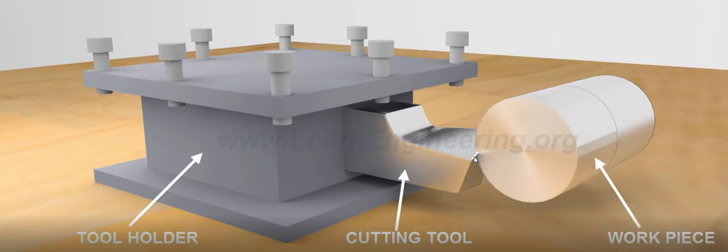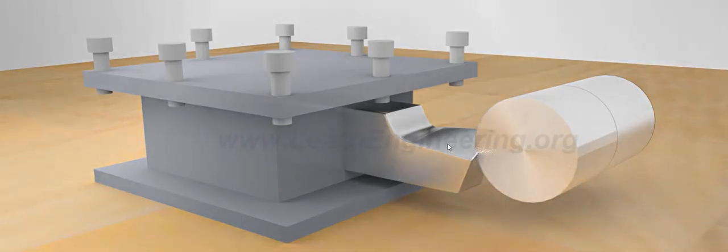Now we will move towards the geometry of a single point cutting tool. The end cutting edge makes an angle with the perpendicular to the tool length — this angle is known as the end cutting edge angle. Similarly we have the side cutting edge angle and the nose radius. We also have a back rake angle and side rake angle, and similarly an end flank angle and side flank angle, also called the side clearance angle and end clearance angle.